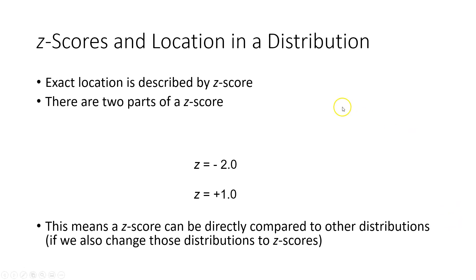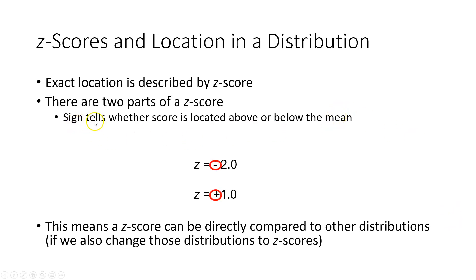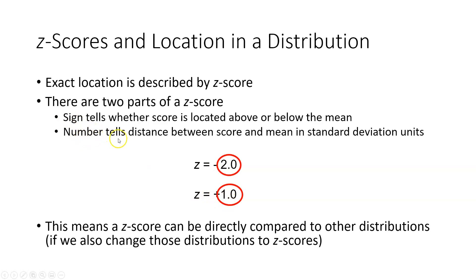There are two parts of a z-score. The sign — whether it's positive or negative — tells whether the score is located above or below the mean. So a z of negative 2 is below the mean, and a z of positive 1 is above the mean. The number tells the distance between the score and the mean in standard deviation units. So negative 2 is two standard deviations away from the mean, and positive 1 is one standard deviation away.